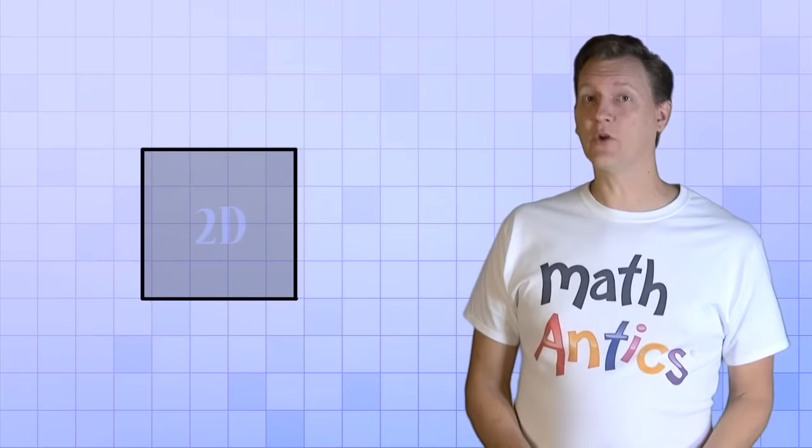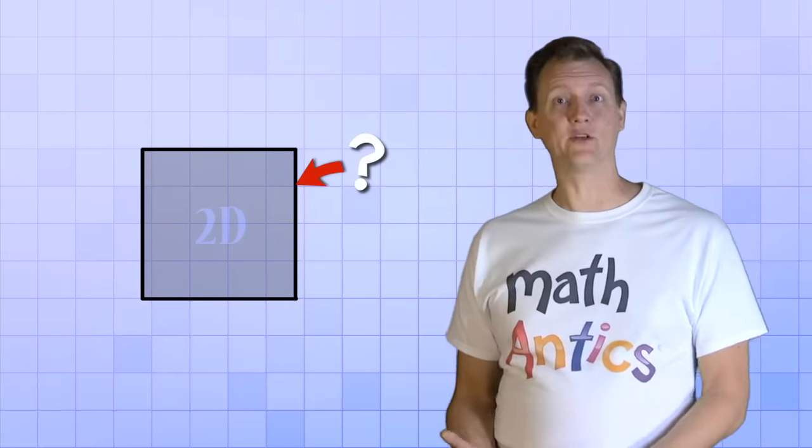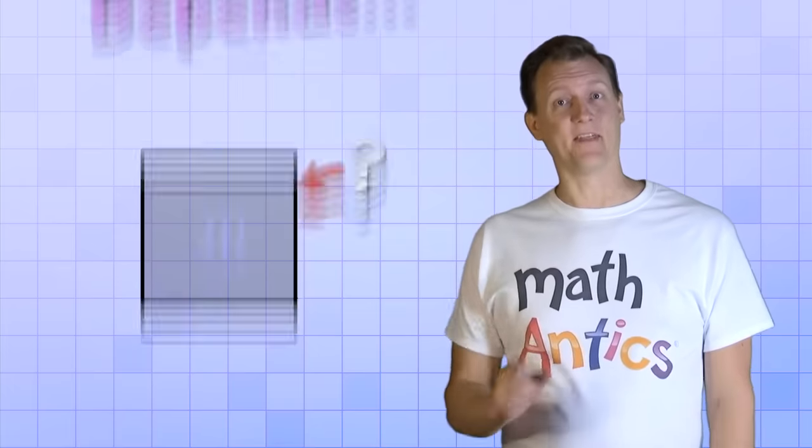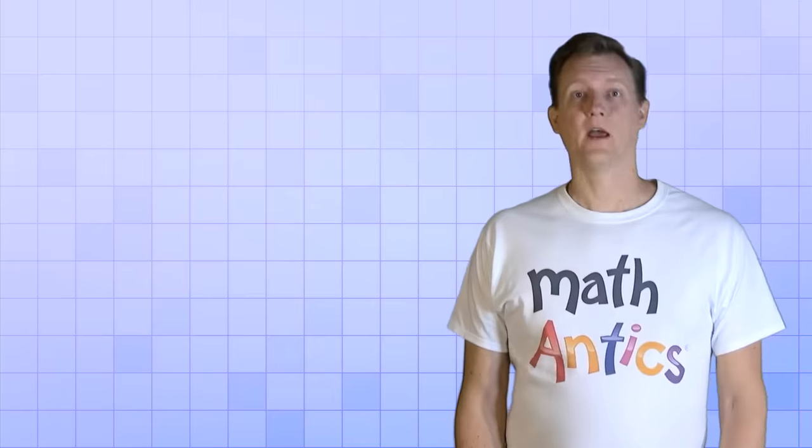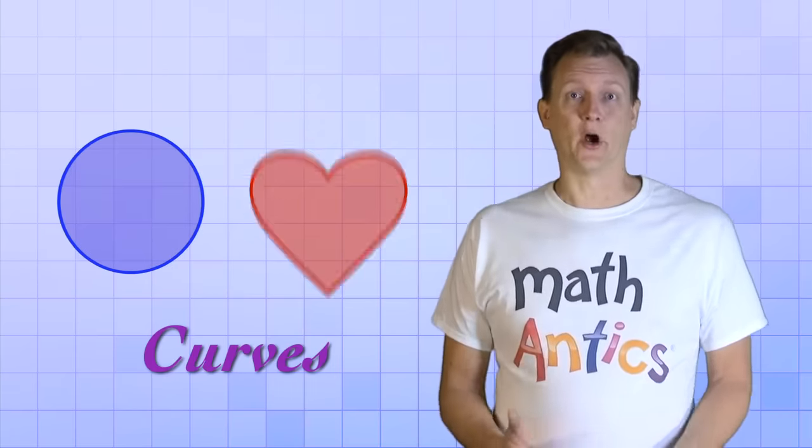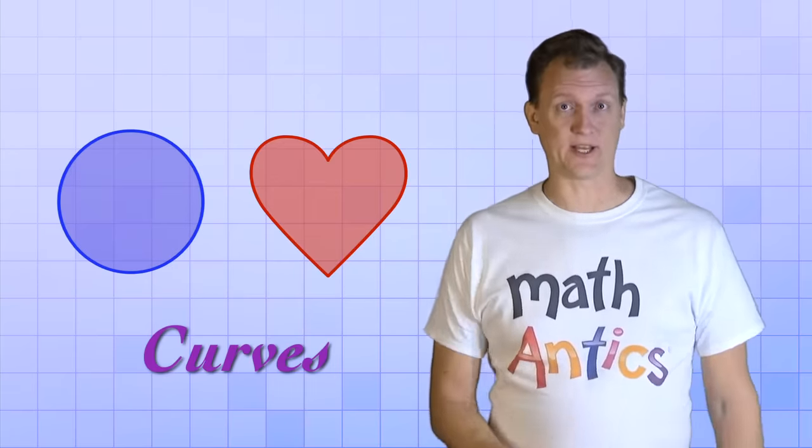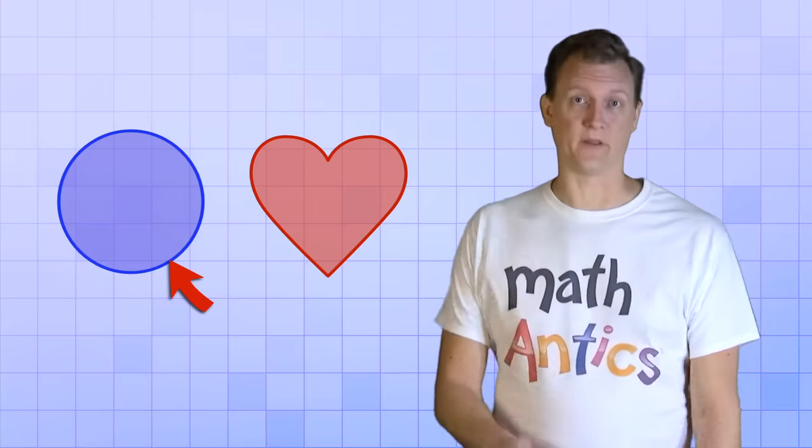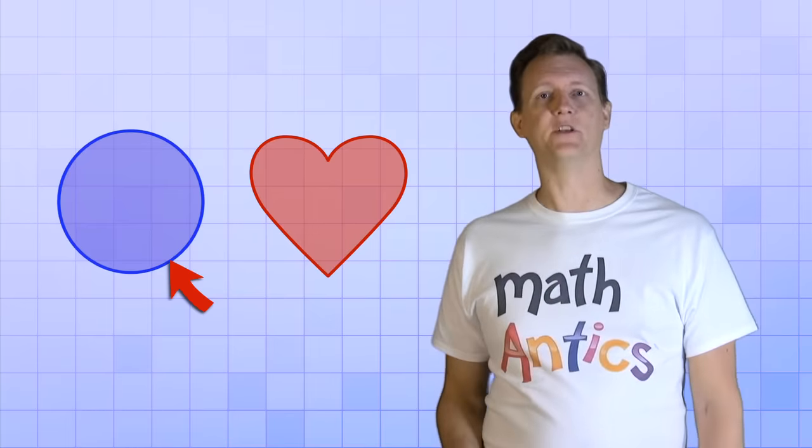So now that you know what perimeter is, how do we measure or calculate it for different geometric shapes? Well, that depends on the shapes. Finding the perimeter of shapes that have curves, like circles or hearts or things like that, can be tricky. In fact, we'll wait and talk about the perimeter of a circle in another video. In this video, we're just going to focus on how to find the perimeter of polygons.